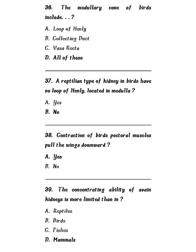Question 36: The medullary cone of words includes loop of Henle, collecting duct, vasa recta, or all of the above. The correct answer is all of the above. The medullary cone of words includes loop of Henle, collecting duct, and vasa recta.